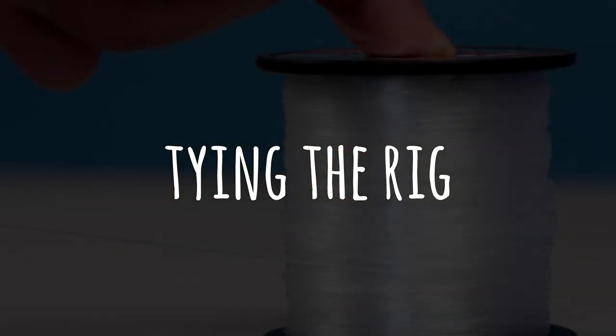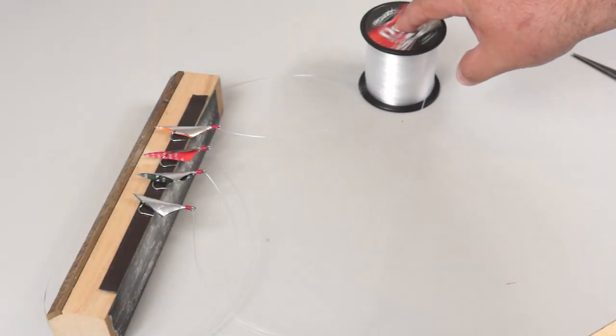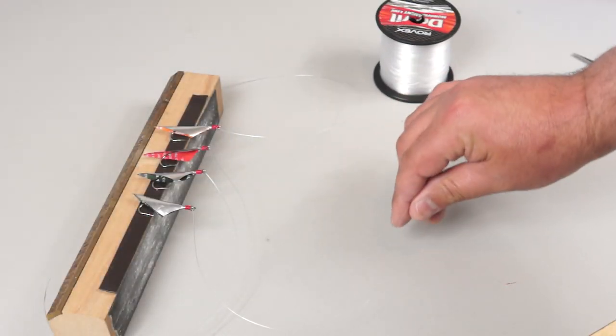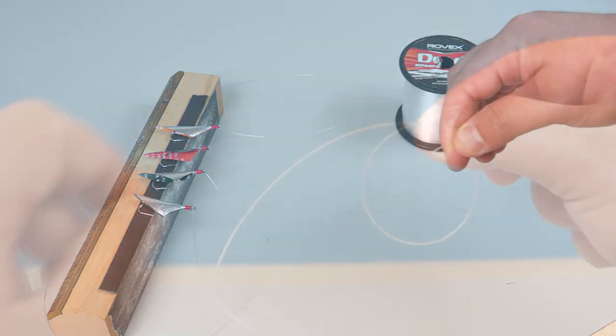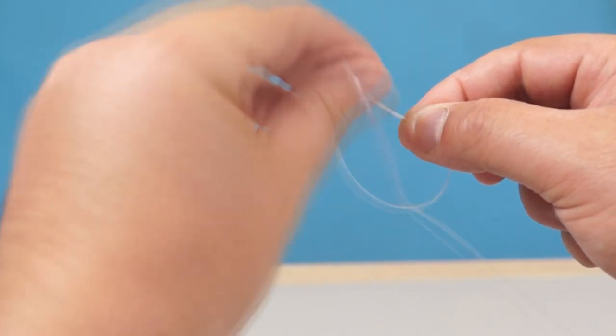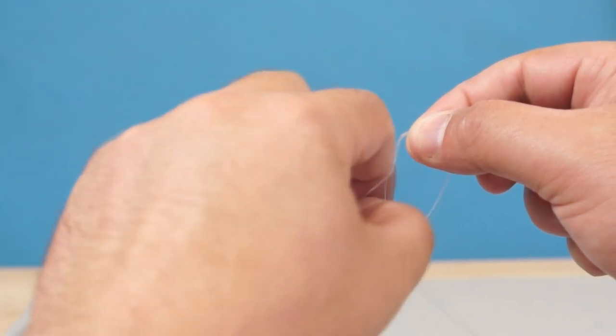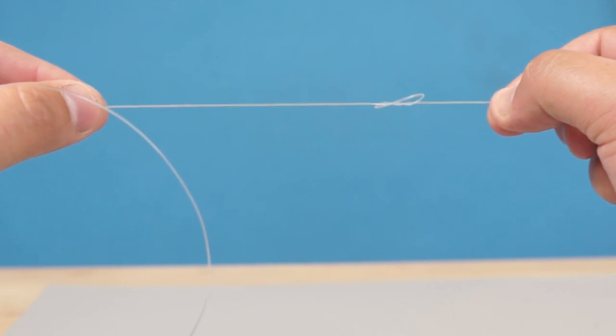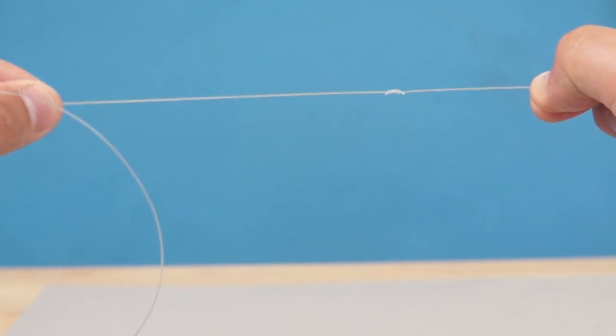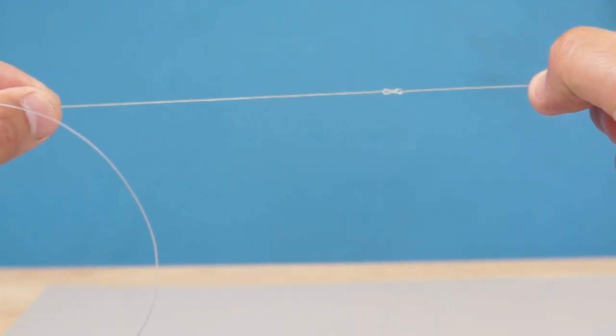For the rig line I need to pull a couple of feet or 600mm of line off the spool. And then make a loop which I can pass the end through twice. Before gently pulling at either side to almost close the knot up until it forms a pair of small loops.